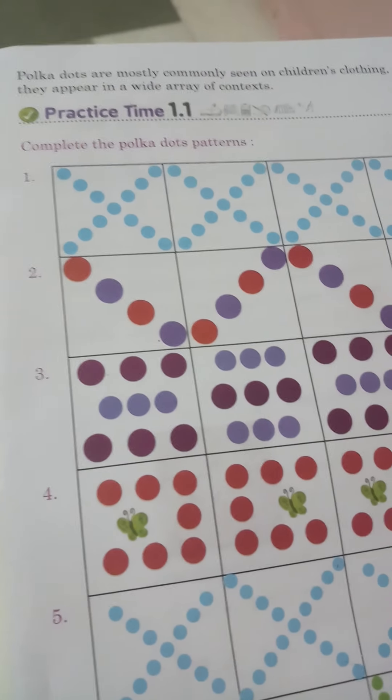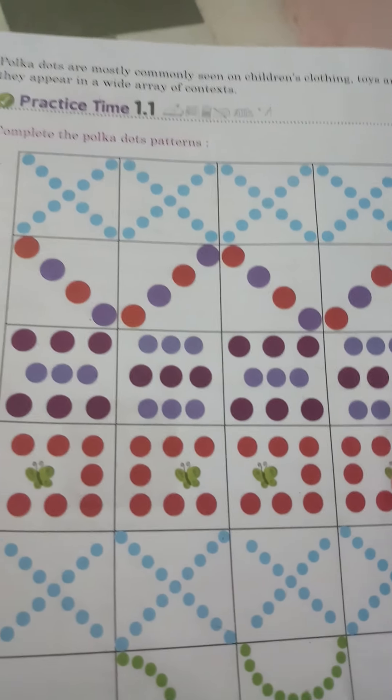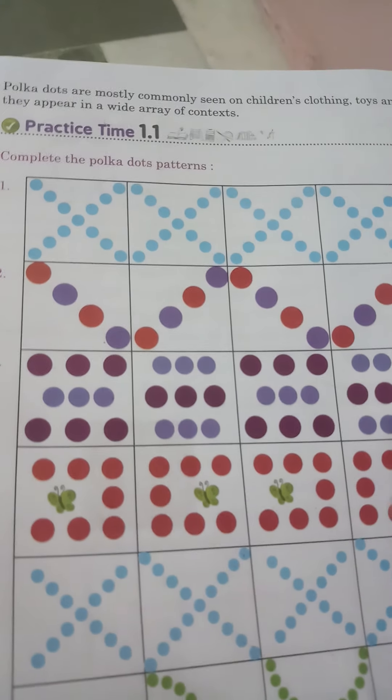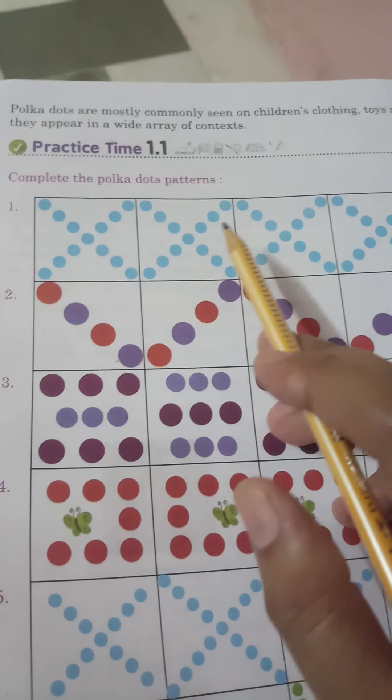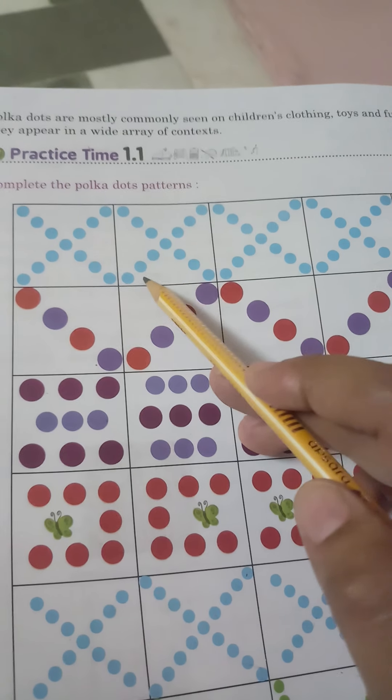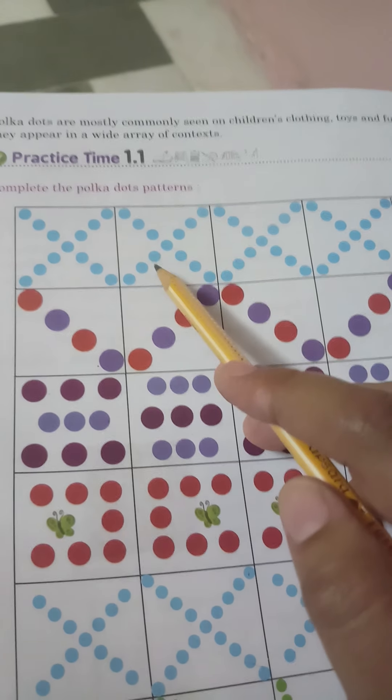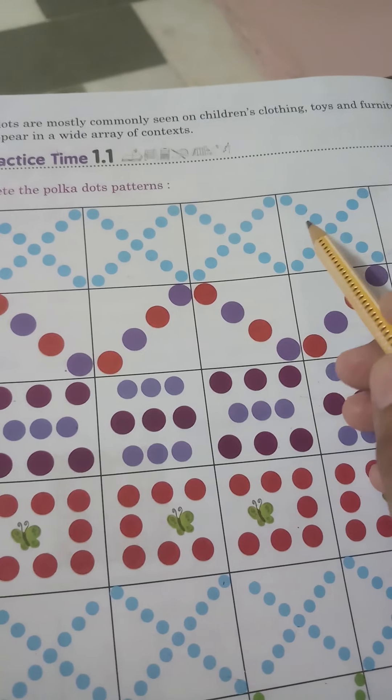Now start exercise number 1.1: complete the polka dot pattern. We will complete this pattern. Complete the dots in the crossing area.